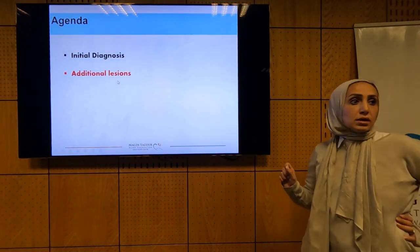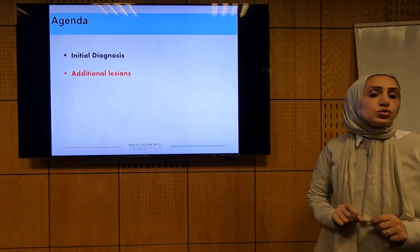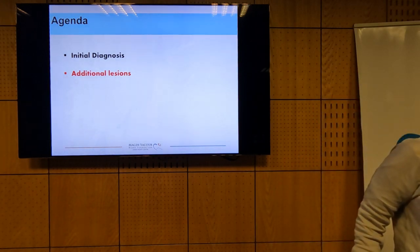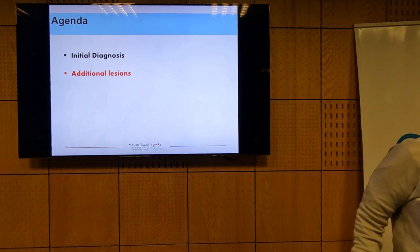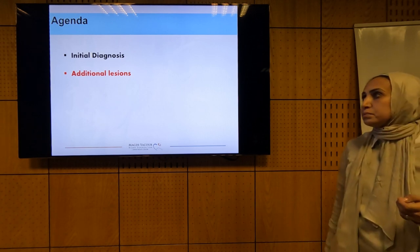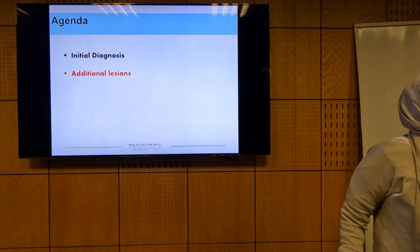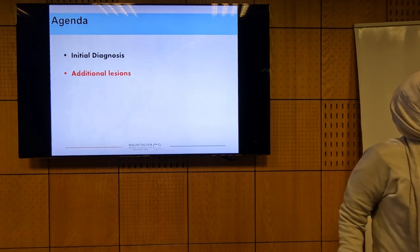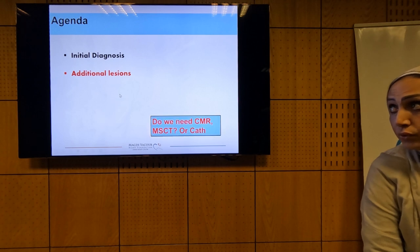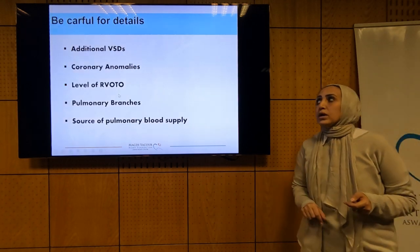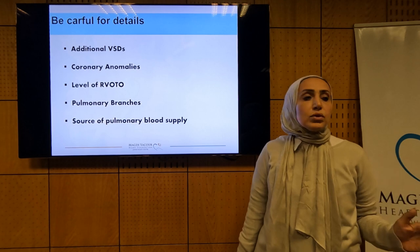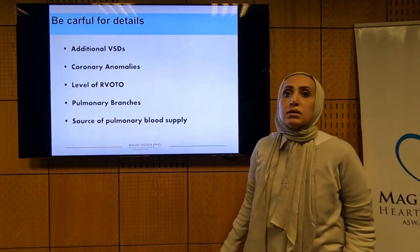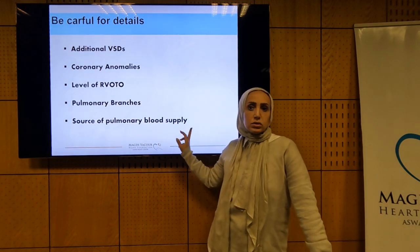Additional lesions are very frequent in Tetralogy of Fallot and must be addressed. Every Fallot should be corrected surgically, and additional lesions have a major influence on the timing of repair. Our checklist covers five things: additional VSDs, coronary anomalies, level of RVOT obstruction, pulmonary artery branches, and sources of pulmonary blood supply.